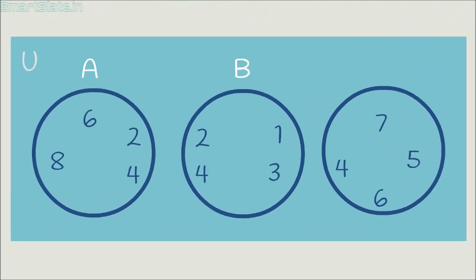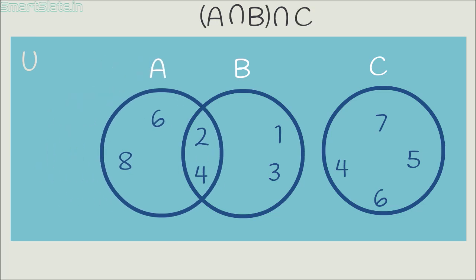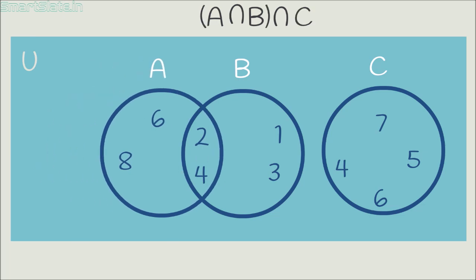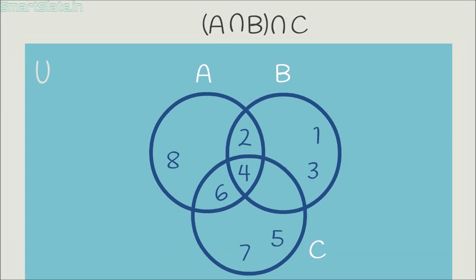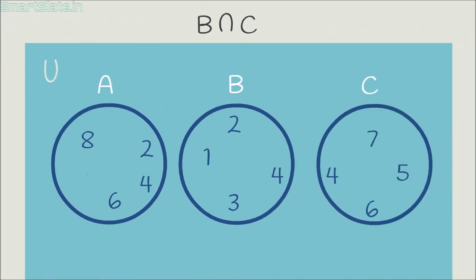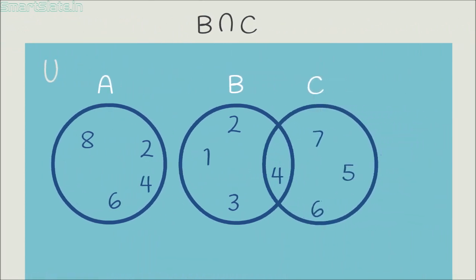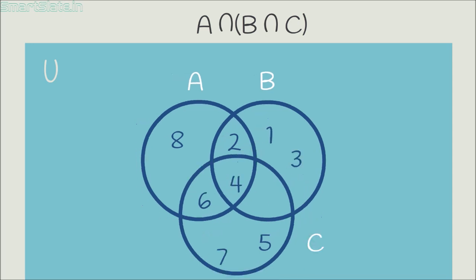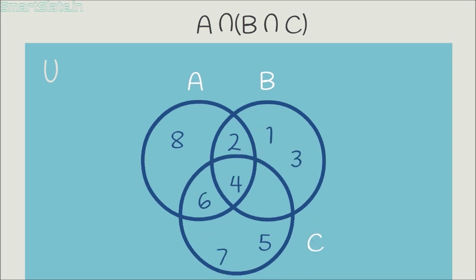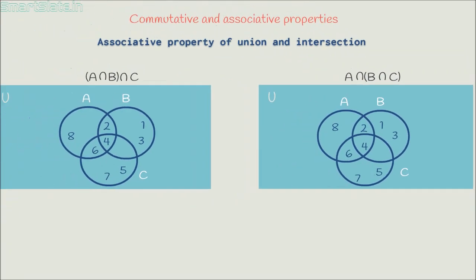Let's prove this with a Venn diagram. Consider sets A, B and C. Intersection of A and B is shown, then intersection with C gives a final diagram. Now find the intersection of B and C, then intersection with A. We arrive at the same diagram. Both diagrams convey the same meaning, and hence we have proved the associative property of set intersection using Venn diagram.